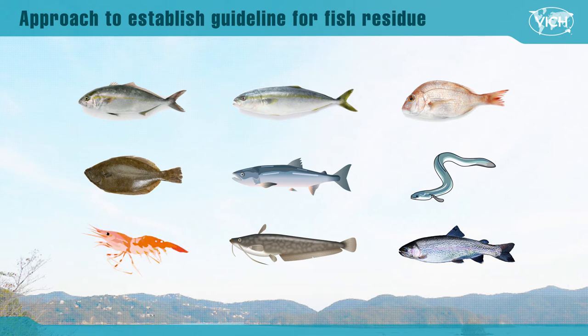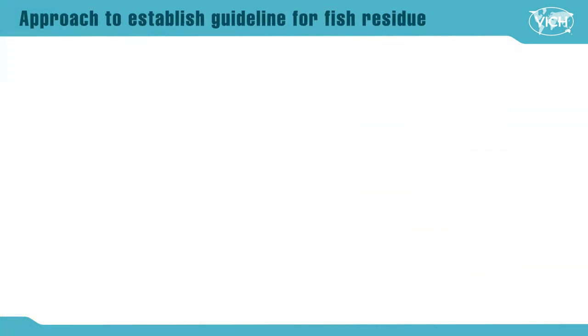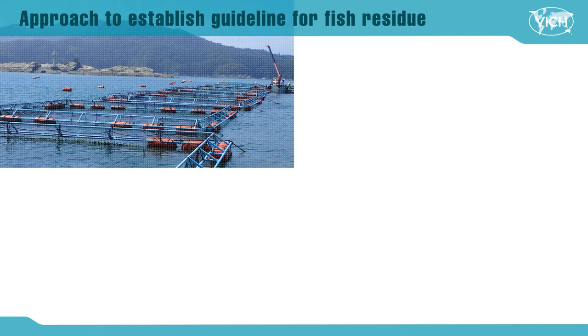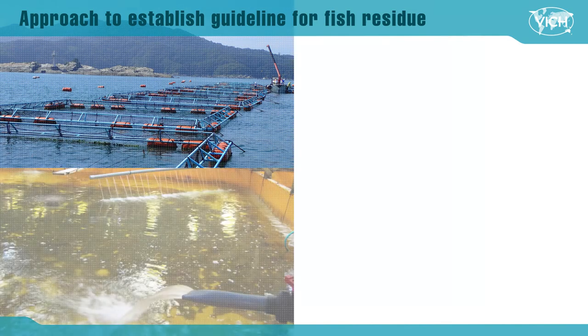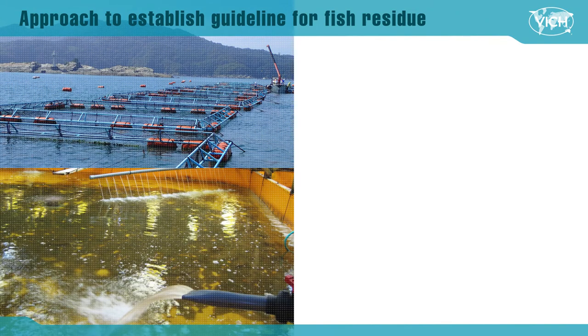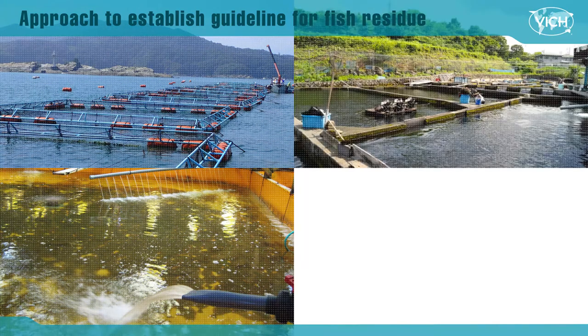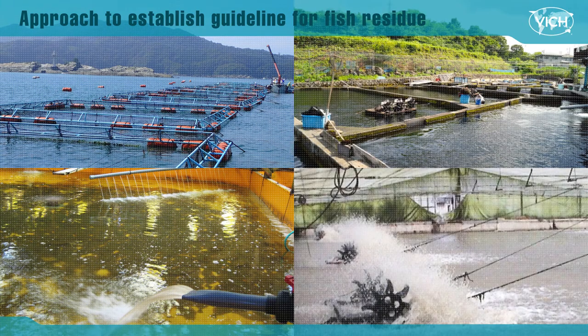Thus, it is rather difficult to conduct residue studies for all fish species in all different conditions. There are different husbandry practices. Seawater fish species are usually grown in pens in the sea; however, some species like flounder are kept in house pools. As for freshwater species, they may grow in pools with free-flowing river water, or in a pond without much of the water circulating. Thus, those husbandry practice differences need to be considered.